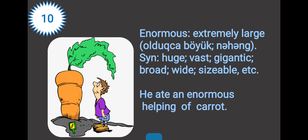Word ten: enormous. Enormous means extremely large. Its meaning in Azerbaijani is 'olduqca böyük', 'nəhəng'. The synonyms are huge, vast, gigantic, broad, wide, sizable, etc. For example: he ate an enormous helping of carrot. Here 'helping' means a large portion, not 'kömək etmək' — it means a big portion.